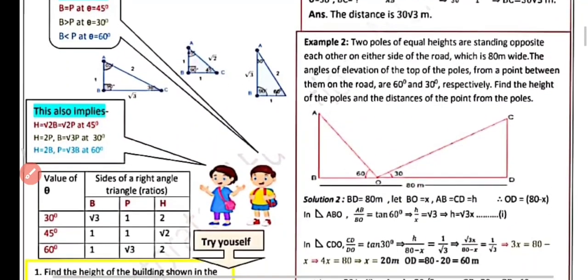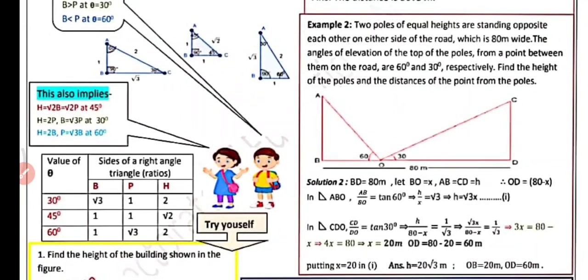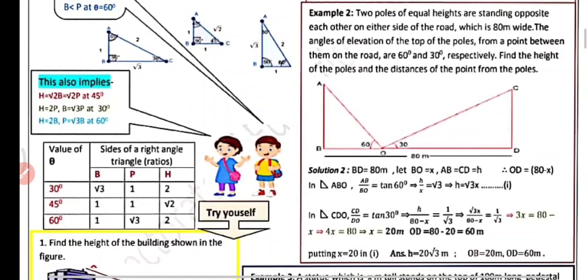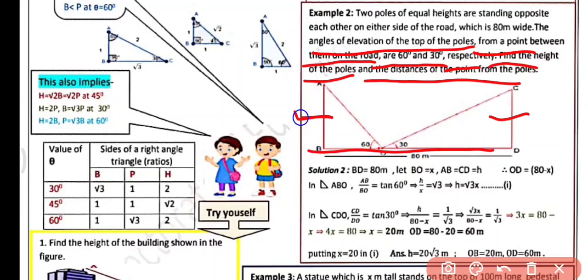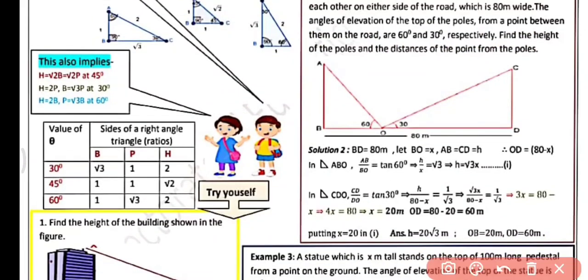Example 2: Two poles of equal heights stand opposite each other on either side of a road which is 80 meters wide. The angles of elevation of the tops of the poles from a point between them on the road are 60° and 30° respectively. Find the height of the poles and the distance of the point from each pole. Let the distance BO = x, so OD = 80 − x.